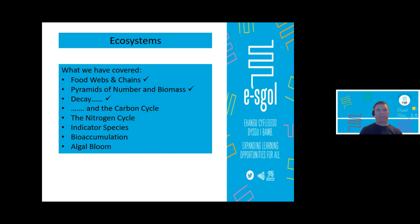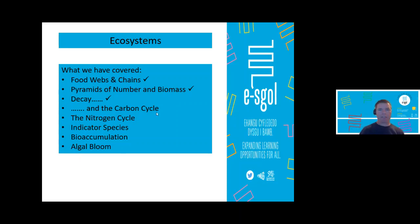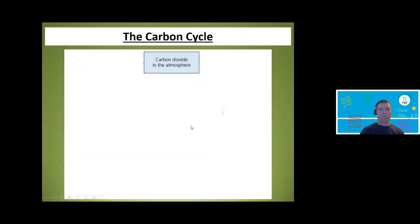Hello everybody. This is Ecosystems — it's the second part of the Ecosystems lesson. The first session covered food chains and food webs, pyramids of number and biomass, and we started decay. Today we're going to start from the carbon cycle, which means we've got quite a lot to get through, but I'm sure we'll manage it. So let's move on to the carbon cycle.